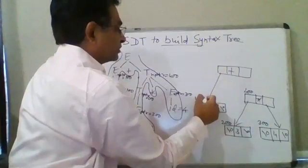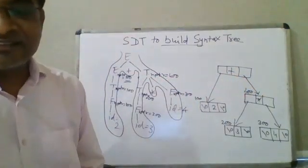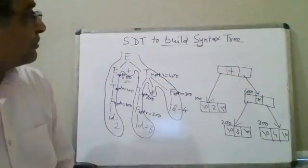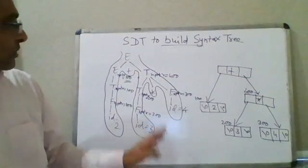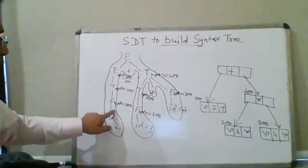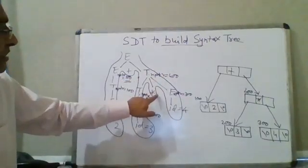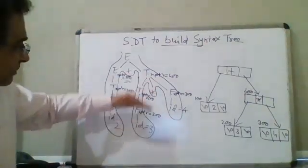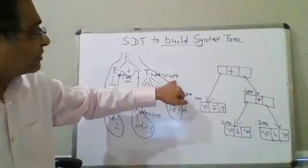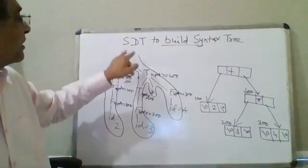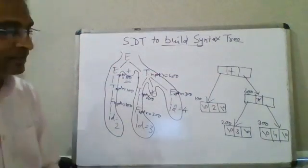Finally, for E → E1 plus T, one more node is created with the plus operator, left pointer pointing to address 100 and right pointer to address 400. This is how the parse tree is built using the make_node action in syntax-directed translation. Nodes are created at addresses 100, 200, 300, and 400, with star executed first at the lower level and plus at the root.